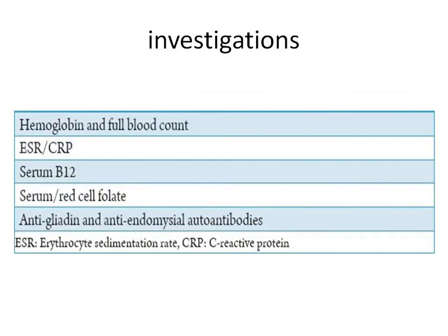Investigations are not recommended routinely. They are indicated if there is persistence of recurrent aphthous ulcerations despite treatment and stress reduction protocols, or if conventional treatments are ineffective. Investigations include: hemoglobin and full blood count for nutritional deficiencies; ESR and CRP for chronic or acute disease; serum B12; serum red cell folate; and anti-gliadin and anti-endomysial autoantibodies. If the last antibodies are positive, it suggests gastrointestinal disturbance or celiac disease.